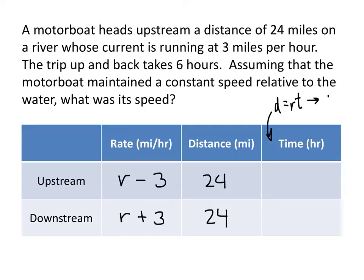And so that means that time is going to equal distance divided by rate. So in this case, the time for the upstream part of the trip is going to be 24 divided by r minus 3. And the time for the downstream part of the trip will be 24 divided by r plus 3. And the other piece of information that the problem tells us is that the sum of those two times is 6 hours.